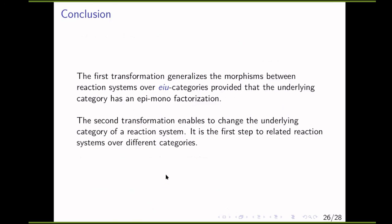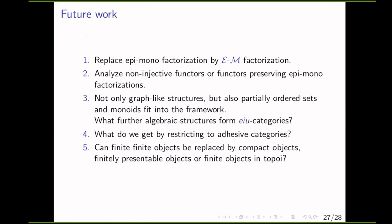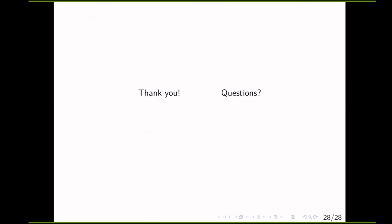To conclude, we propose two transformations: one based on epi-mono factorization and one based on EU-preserving functors. Future work includes replacing epi-mono factorization by EEM factorization, analyzing non-injective functors or functors preserving epi-mono factorization, and studying further algebraic structures that form EU categories. It would also be interesting to restrict to adhesive categories and study whether finite objects can be replaced by compact objects, finitely representable objects, or finite objects in topoi.